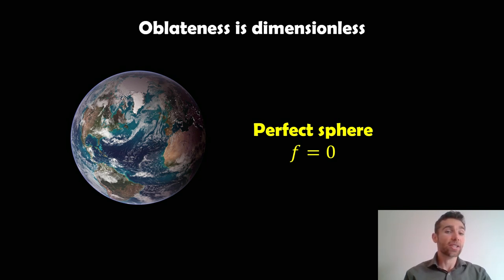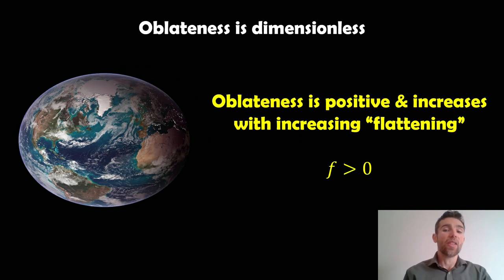Now, as it gets flatter, so if you were to squash it at the poles like I did previously, then what you're going to find is that the oblateness would become positive and it would increase as you flattened it more. So it doesn't go negative. It'll be positive. And then that number will get bigger as you actually flatten it more and more. And it's dimensionless, again. So it doesn't have any kind of units or anything. It's just a number.